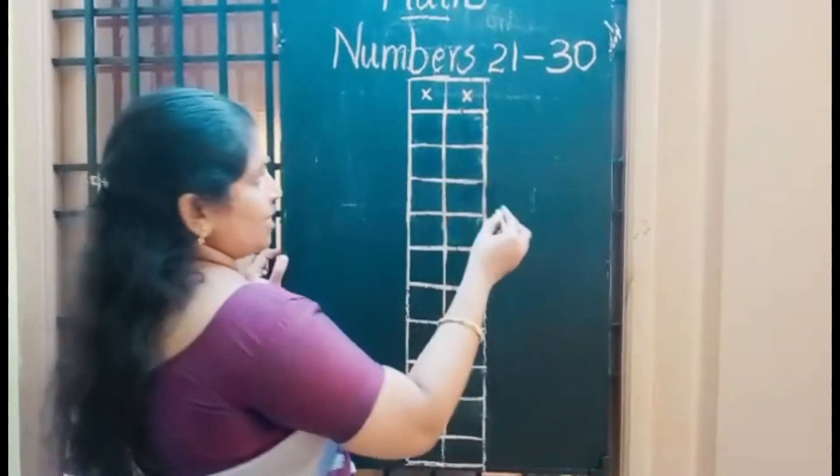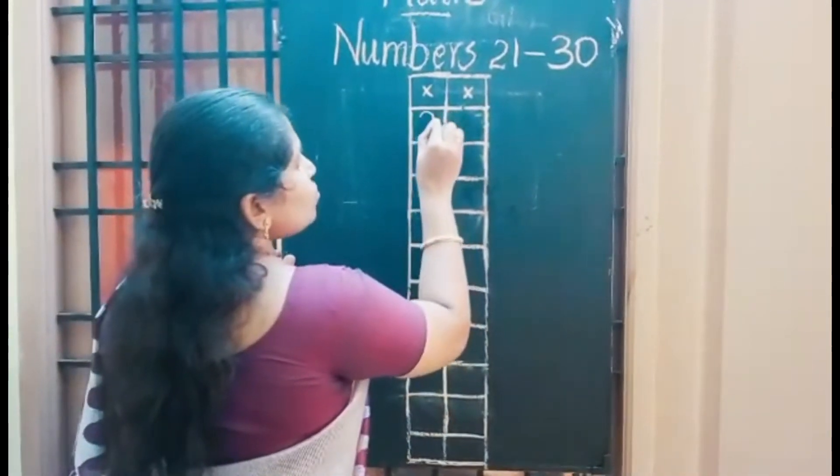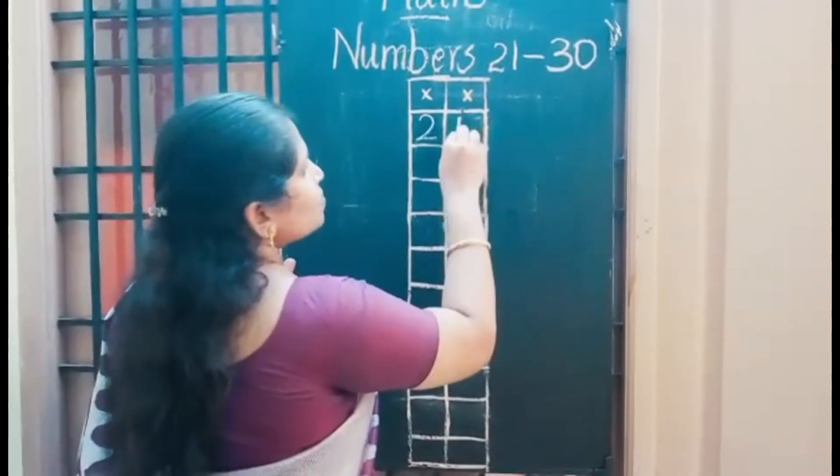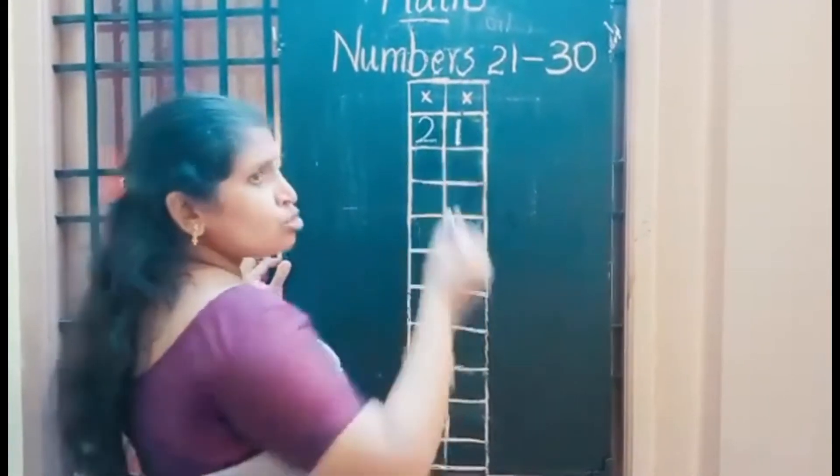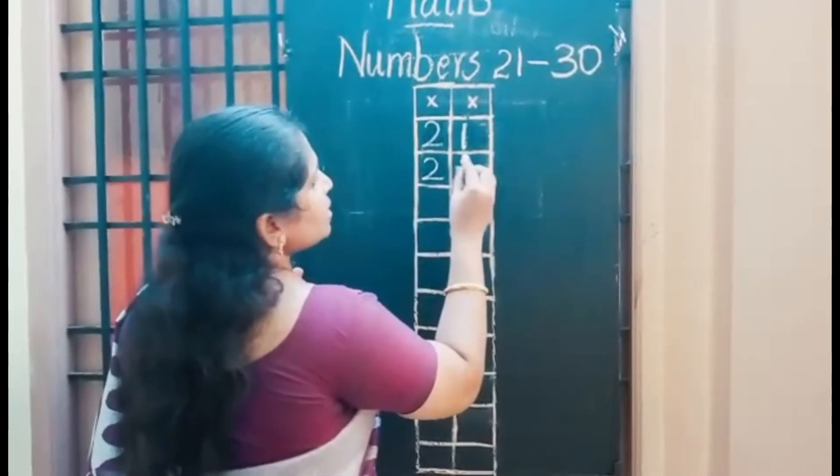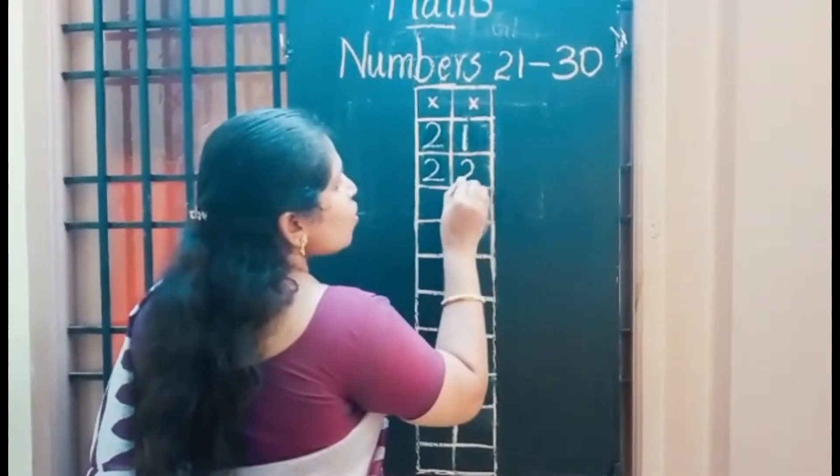2 1 is 21. So, write 2 in the 10th place, 1 in the 1's place. 2 2, 22. Write 2 in the 10th place, 2 in the 1's place.